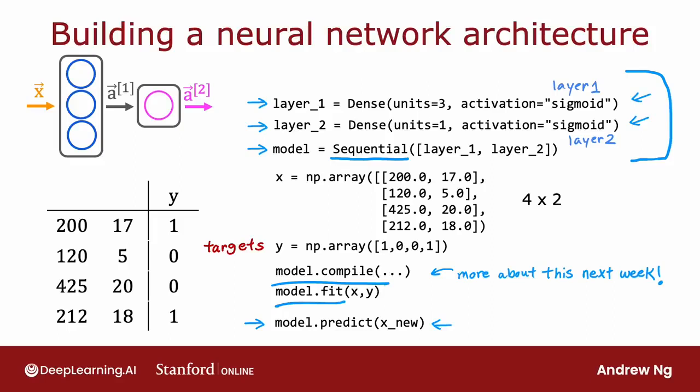So if you look at others' TensorFlow code, you often see it look more like this, rather than having an explicit assignment to these layer one and layer two variables.